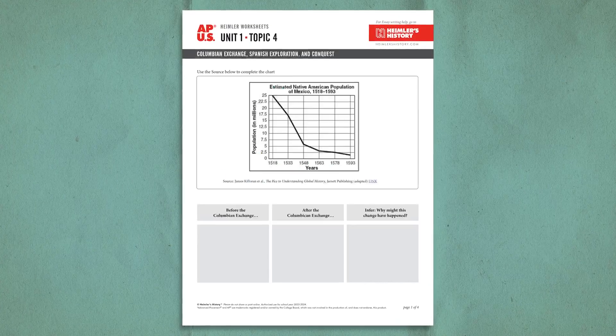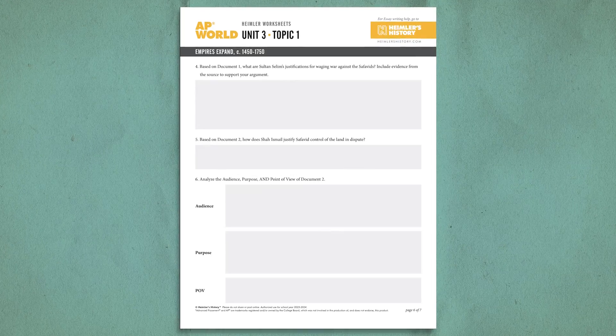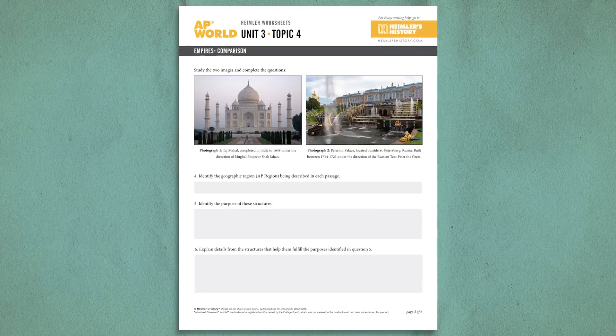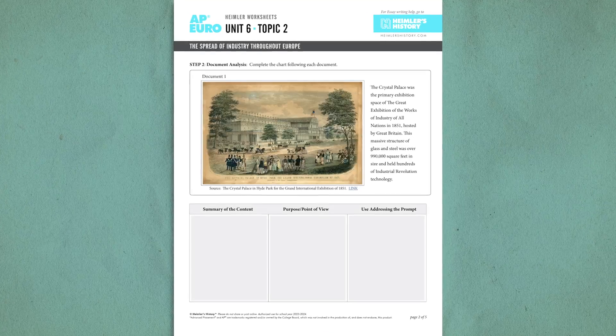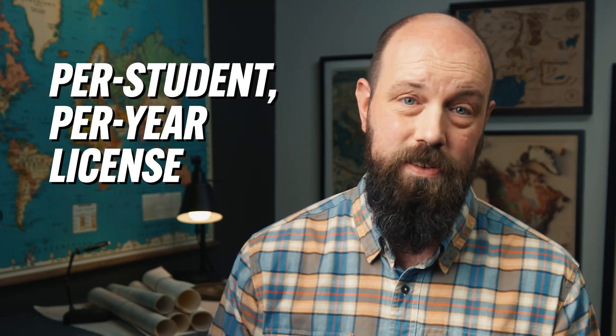Even better, the worksheets are scaffolded so that they introduce your students to the easier skills first, and then the harder skills once they've mastered those. They'll be interpreting and sourcing documents, learning how to support theses with evidence, getting their geography right, learning to compare and contrast, analyze change and continuity over time, contextualize, and all the rest. They're pretty amazing, and I can say that because I've had a lot of help from a team of veteran AP teachers. Follow the link below and have a look at some of the samples. They are sold with a per-student, per-year license.